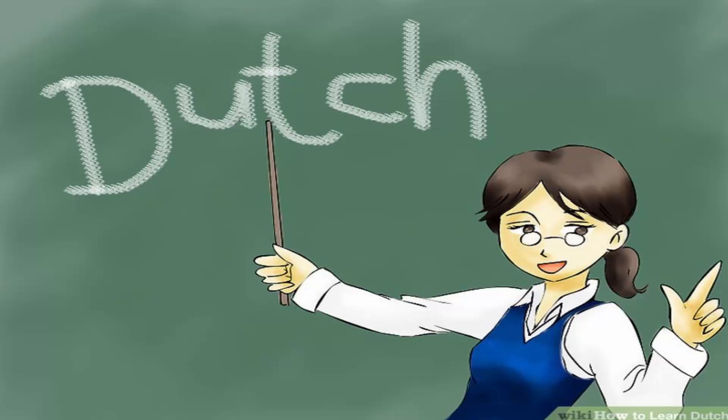This is Unit 2 of Pimsleur's Speak and Read Essential Dutch. The same American has finally found Ms. Janssen.